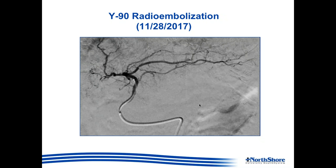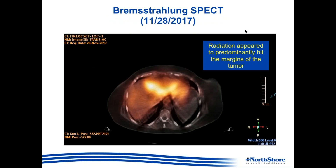The patient was then scheduled for Y-90 radioembolization shortly thereafter. Here again we see the catheter inserted, passed through the hepatic artery proper and into one of the branches of the left hepatic artery. You can see a very faint amount of tumor blush compared to the previous image, and the patient was treated with Y-90 therapy.